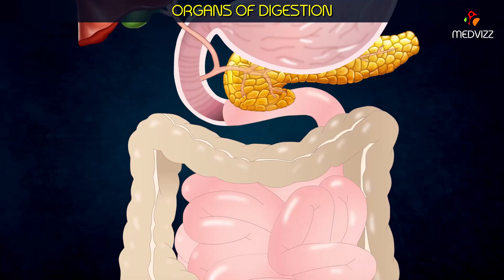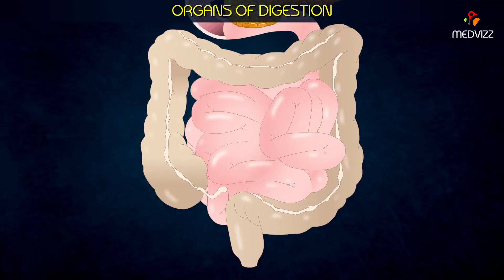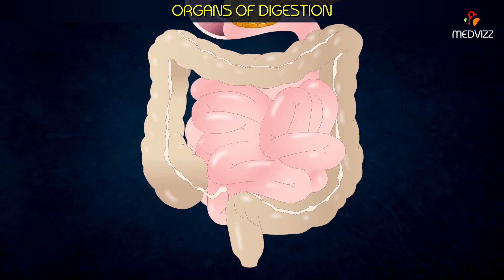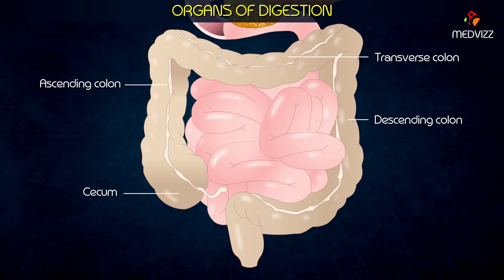Chyme not absorbed in the small intestine enters the large intestine. As it passes through the cecum and ascending, transverse, descending, and sigmoid colon, water and salts are absorbed and chyme is converted into feces.